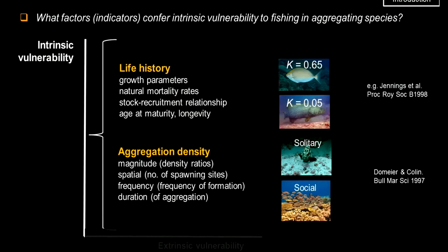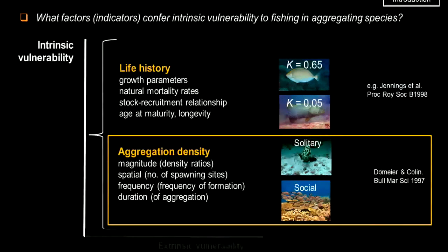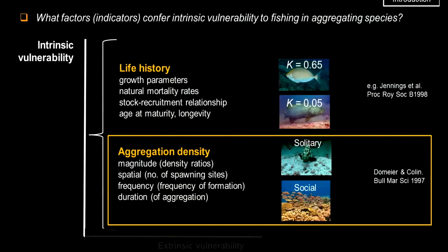I'm particularly interested in aggregation density — the magnitude of density change. Solitary groupers, when they aggregate for spawning, show huge density changes, many thousands of times greater densities. More social species show less change. I'm also interested in the number of spawning sites — those with fewer sites tend to have larger density changes — and the frequency and duration of those aggregations. Life history is important and comes back in when I assess multiple fisheries, but density is the major focus of the PhD.